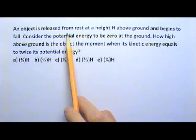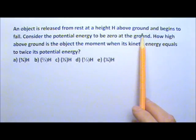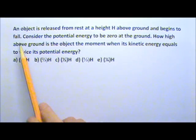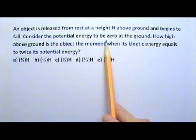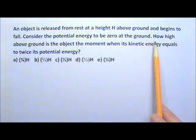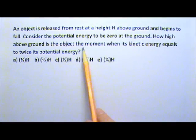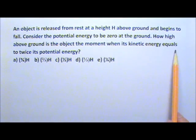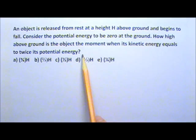An object is released from rest at a height H above ground and begins to fall. Consider the potential energy to be zero at the ground. How high above ground is the object the moment when its kinetic energy equals twice its potential energy?